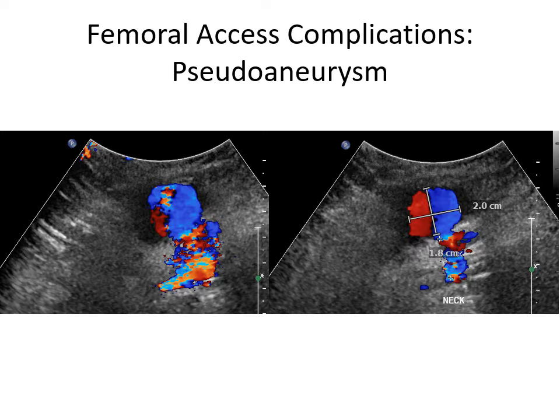Here we show the duplex ultrasound of a groin pseudoaneurysm that developed in an 86-year-old man who presented for coronary angiography. He was found to have left main disease and was given 10,000 units of heparin during the procedure for intravascular ultrasound. Despite a clean front wall femoral artery stick, angiography revealed that the access was low, a closure device was not used, and instead the sheath was sutured in place. It was retrieved around two hours later once the ACT was lower, but a large groin hematoma had developed despite manual pressure followed by a femstop applied.